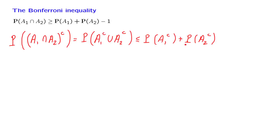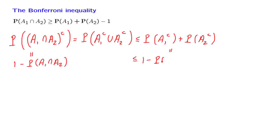Now we're getting close, except that here we have complements, whereas up here we do not. The probability of the complement of an event is 1 minus the probability of that event. So this probability is equal to 1 minus the probability of A1, and this probability is equal to 1 minus the probability of A2. If we take this inequality, cancel terms, and move terms around, we obtain exactly the relation we wanted to prove.